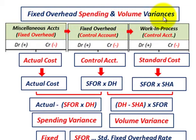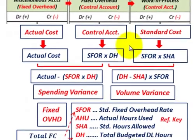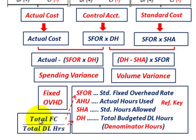Now let's look at fixed overhead spending and volume variances. You accumulate all fixed overhead for the period at actual cost from miscellaneous accounts, which flows into a fixed overhead control account, and then into work in process at standard cost. The key: SFOR is the standard fixed overhead rate, AHU is actual hours used, SHA is standard hours allowed, and DH is total budgeted direct labor hours — denominator hours. The standard fixed overhead rate is total estimated fixed cost divided by total estimated direct labor hours.